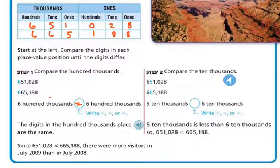All right, step two. Now we're going to compare the ten thousands place. So here's my ten thousands place. There's 5 ten thousands and there's 6 ten thousands in this number. So the one with 5 ten thousands is going to be less than the one with 6 ten thousands. So 5 ten thousands is less than 6 ten thousands.